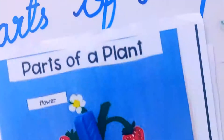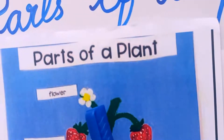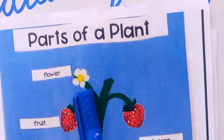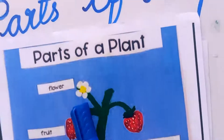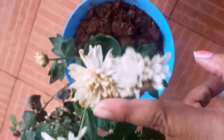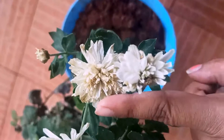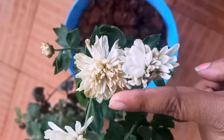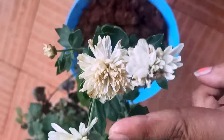Now, flower. This is the flower. You can see here in this plant the flower. This is a part of a plant.